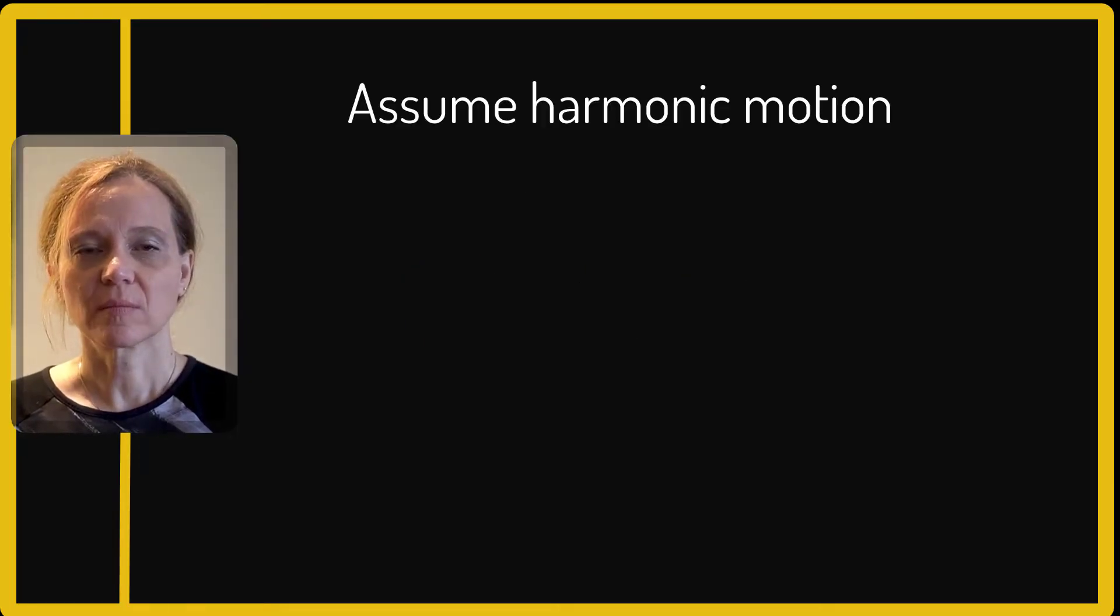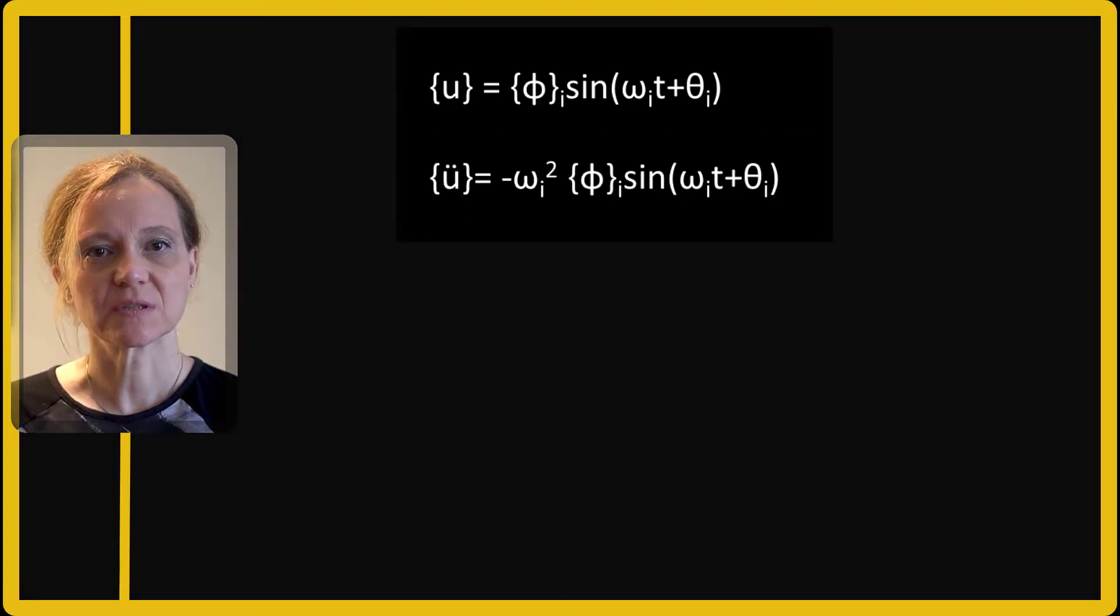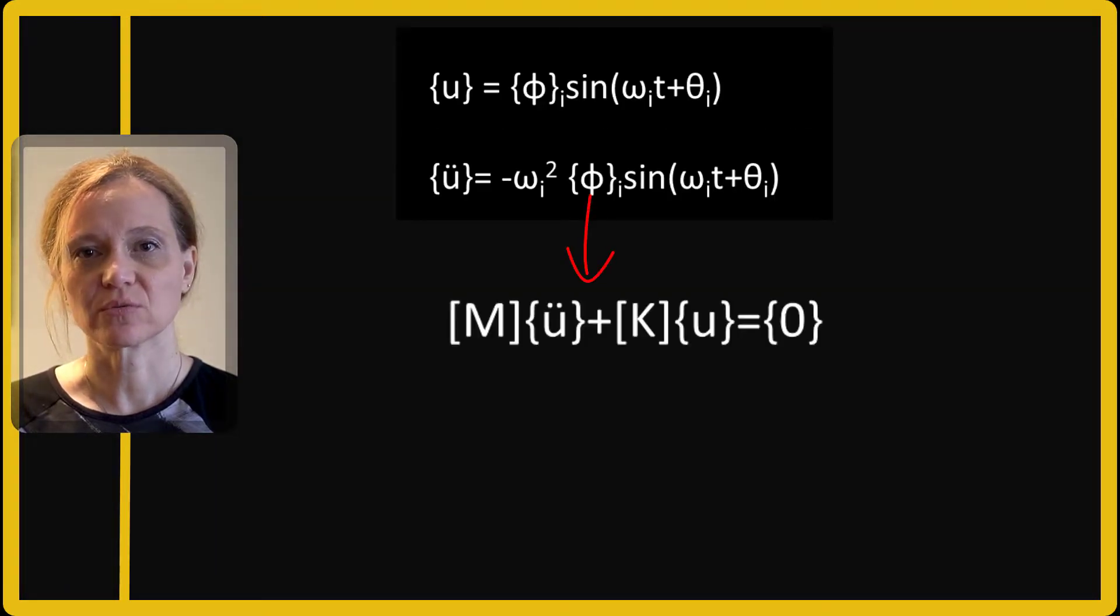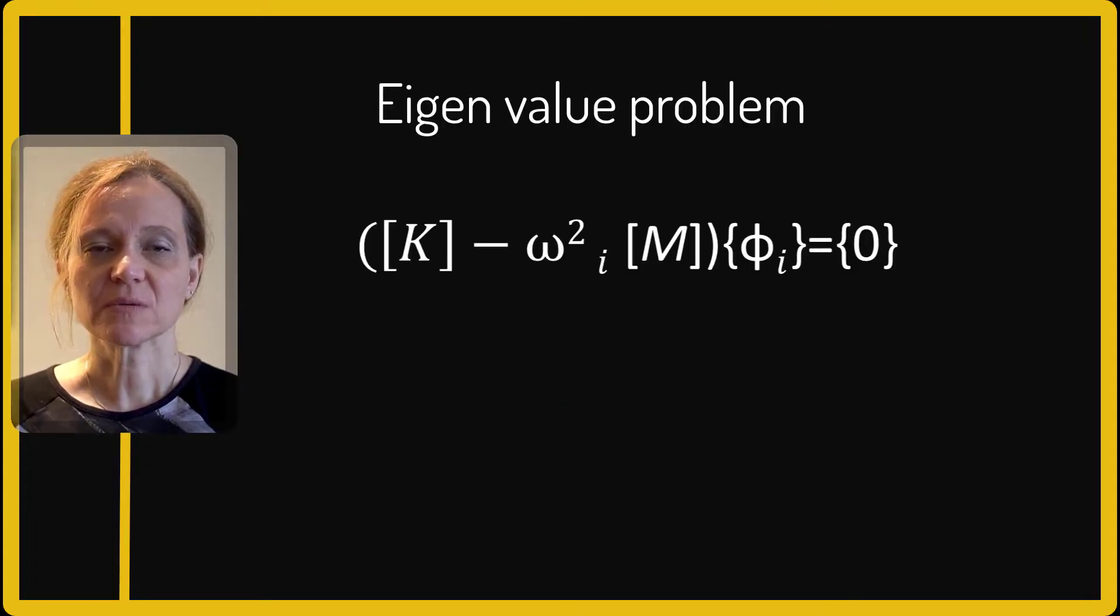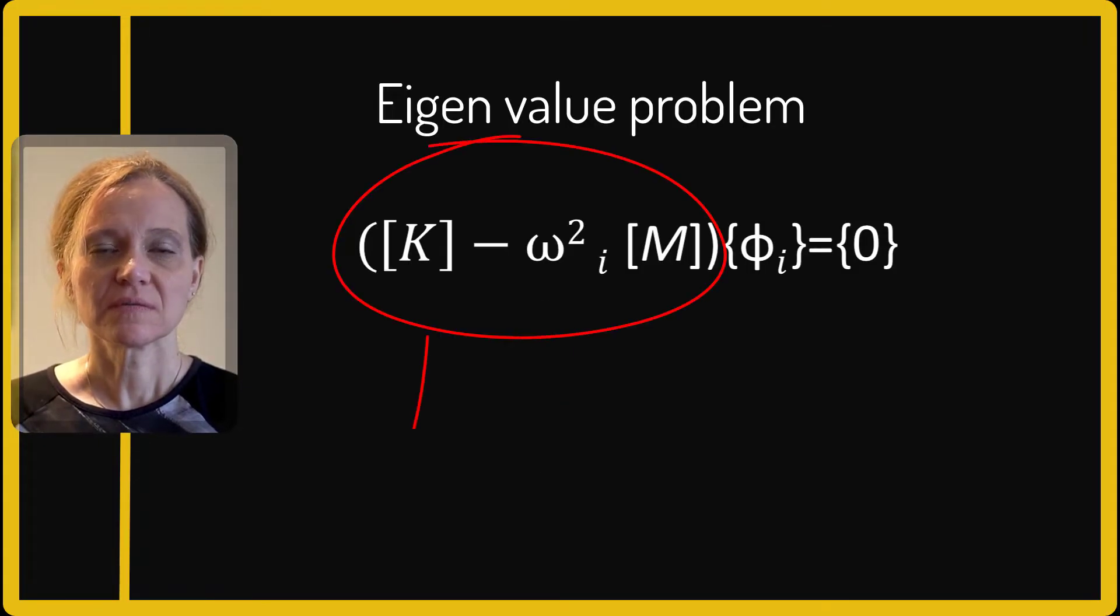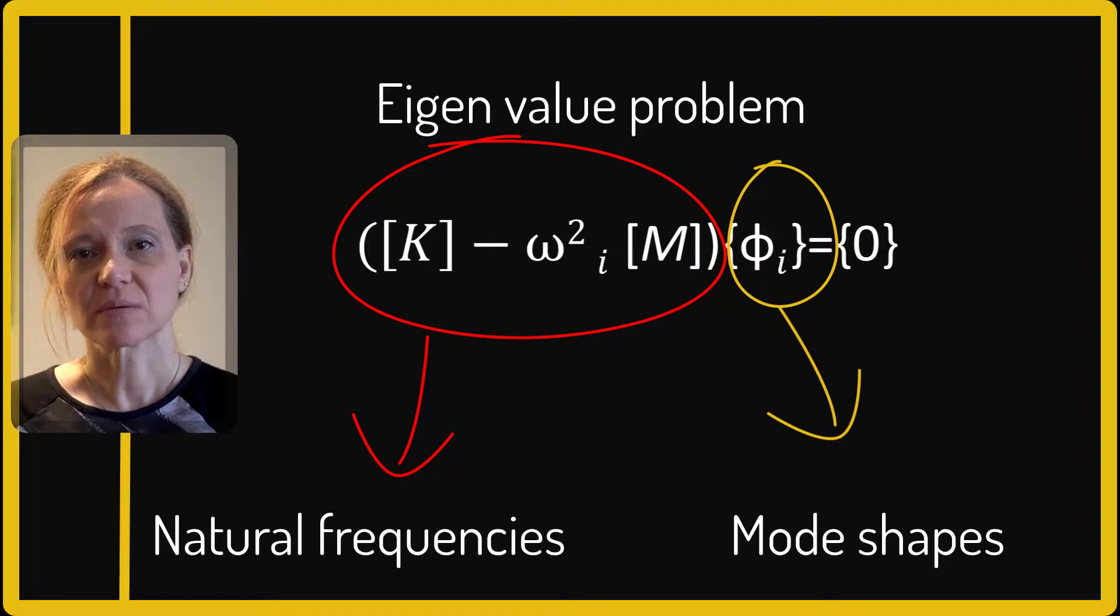If we assume harmonic motion, the displacement and acceleration vectors can be expressed by these two equations. Substituting displacement and acceleration back into the equation of motion, we can get the eigenvalue problem. Solving for the first part of this equation gives the natural frequencies omega, and solving for the second part gives the mode shapes phi.